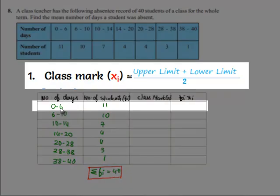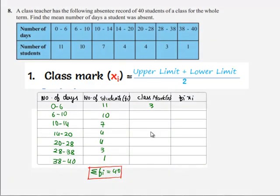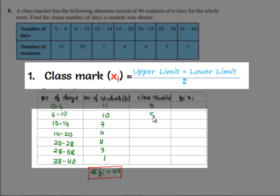That is 0 plus 6 by 2, it's 3. And similarly if we do, we get 8, 12, 17, 24, 33, and 39.